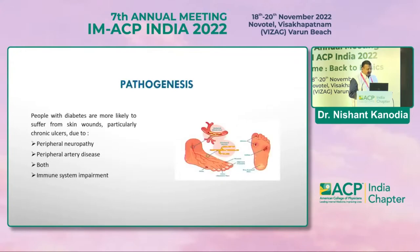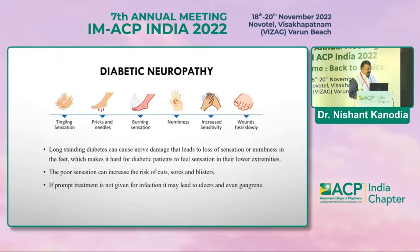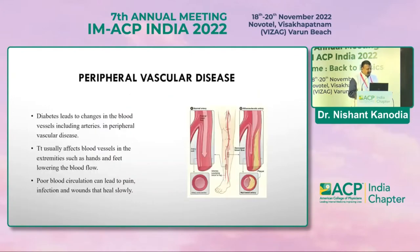The pathogenesis of chronic ulcers most likely involves peripheral neuropathy and peripheral arterial disease, or both, combined with a low immune system. Long-standing diabetes can cause nerve damage in the form of tingling sensations, pins and needles, burning sensations, numbness, and increased sensitivity, increasing the risk of cuts, sores, or blisters. Peripheral vascular disease causes changes in blood vessels including arteries, affecting blood flow to the extremities of the hands and feet. Poor blood circulation can lead to pain, infection, and very slow wound healing.